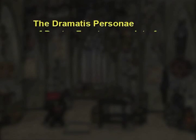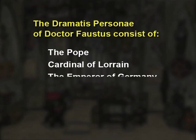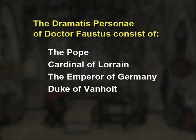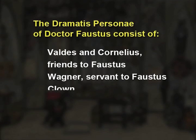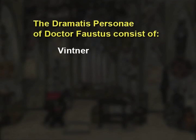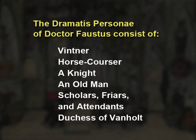The dramatis personae of Dr. Faustus consists of the Pope, the Cardinal of Lorraine, the Emperor of Germany, the Duke of Van Holt, Faustus himself, Waldus and Cornelius as friends to Faustus, Wagner as servant to Faustus, a clown, Robin, Ralph, Wintner, the Horse Courser, a knight, an old man, scholars, friars and attendants, and the Duchess of Van Holt.